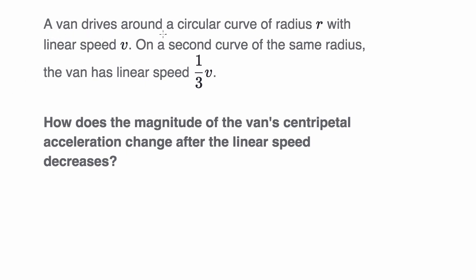We are told that a van drives around a circular curve of radius r with linear speed v. On a second curve of the same radius, the van has linear speed 1/3 v. You could view linear speed as the magnitude of your linear velocity. How does the magnitude of the van's centripetal acceleration change after the linear speed decreases? We know that the magnitude of centripetal acceleration in general is equal to linear speed squared divided by the radius of the curve.